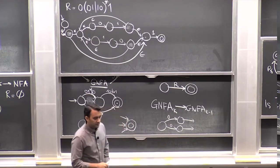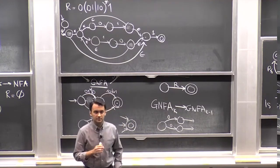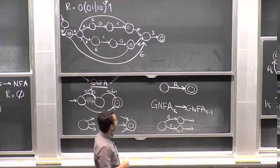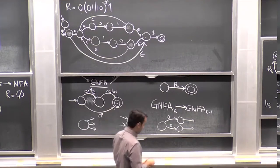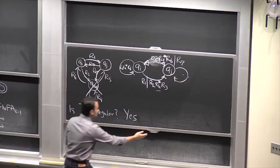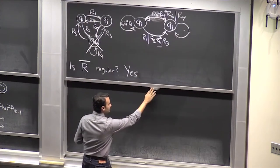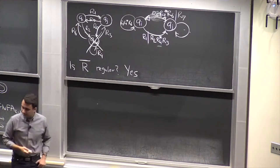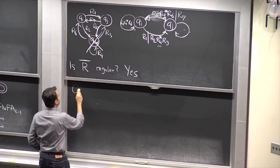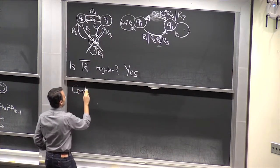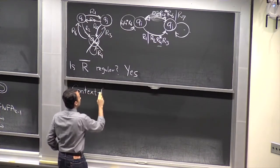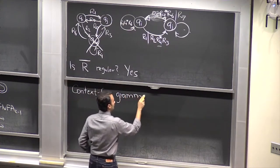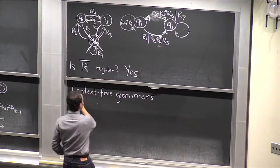Let me move on to context-free languages, or context-free grammars. This ends our section on regular expressions and DFAs. We can now move on to context-free grammars. This is a concept that's probably easier to explain with the help of an example.